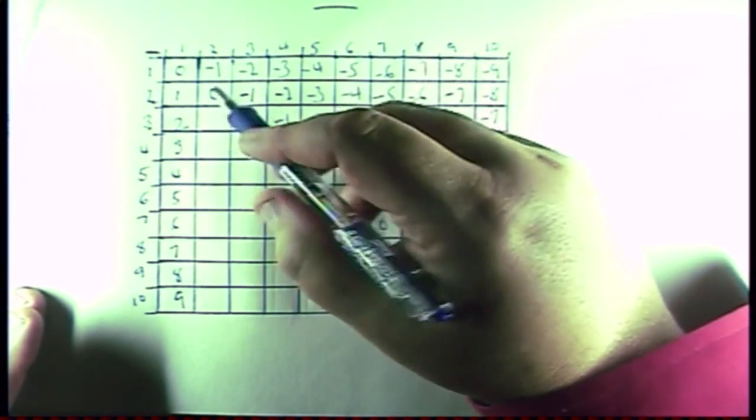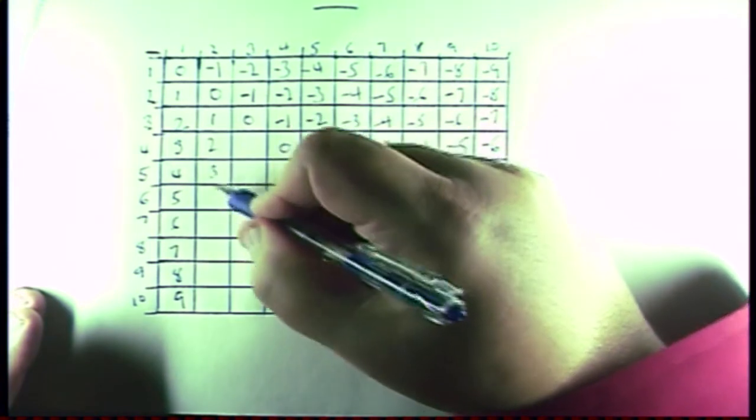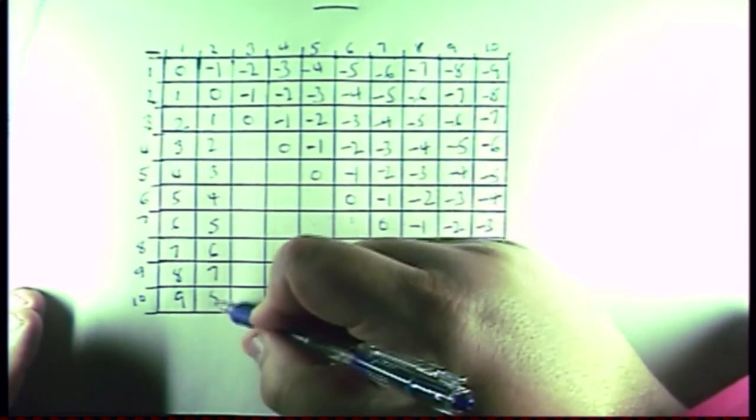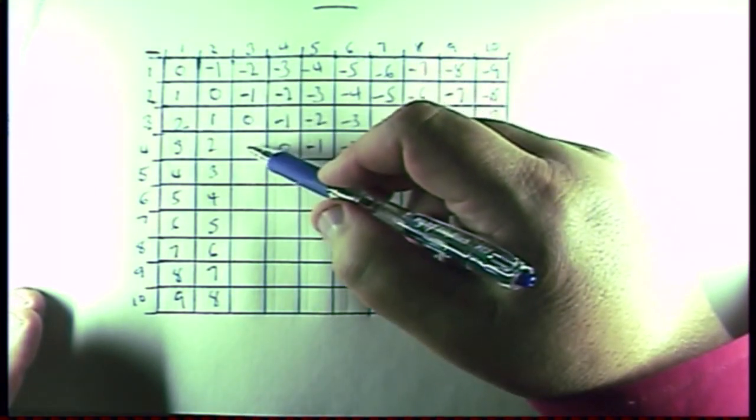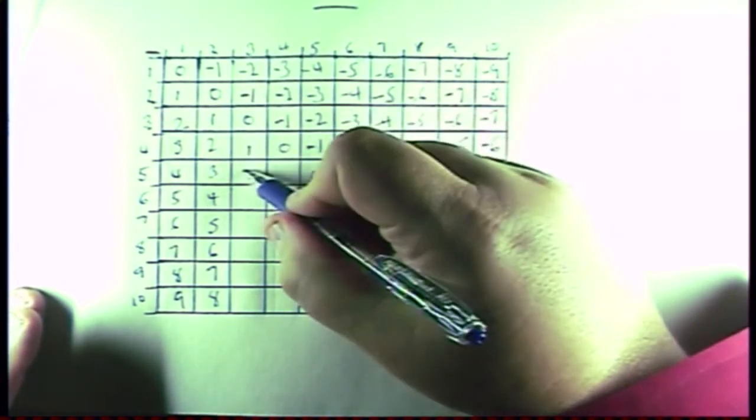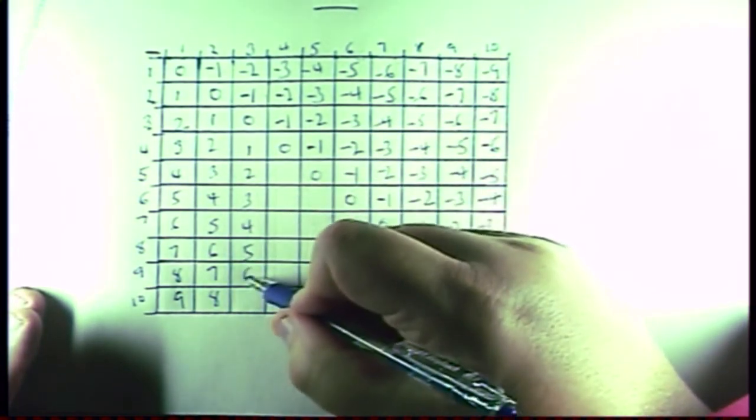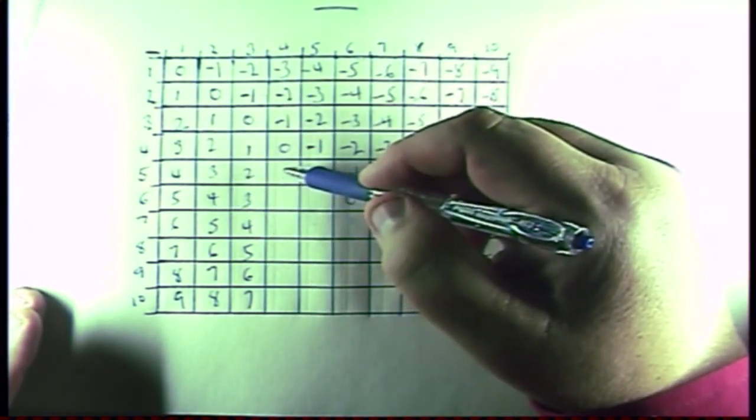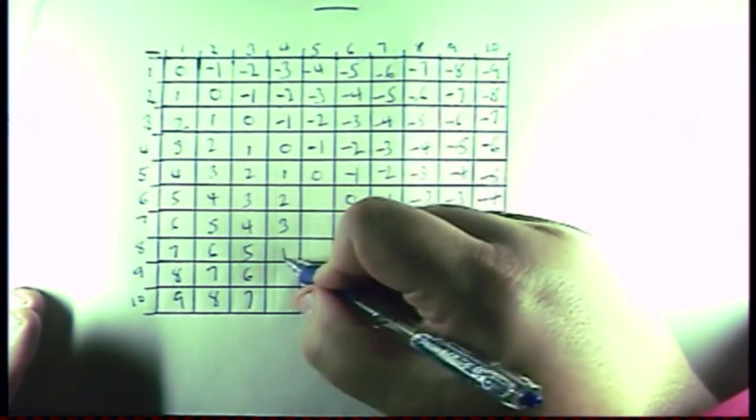3 minus 2 is a 1, 2, 3, 4, 5, 6, 7, 8. 4 minus 3 is a 1, 2, 3, 4, 5, 6, and a 7. And then 5 minus 4 again is a 1, 2, 3, 4, 5, 6.